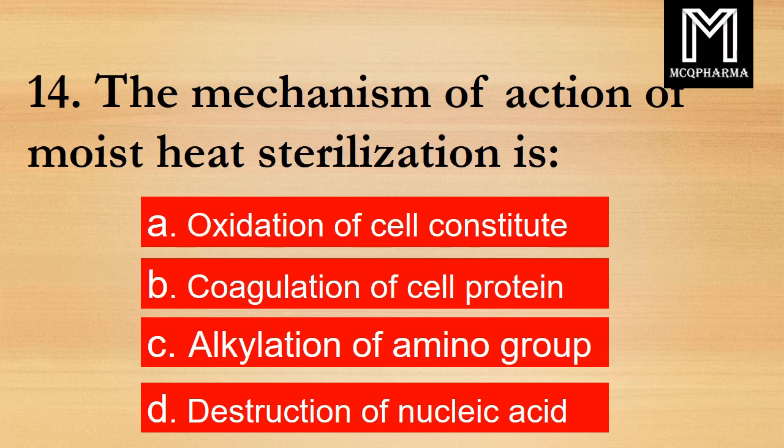Question number 14. The mechanism of action of moist heat sterilization is? Option A: Oxidation of cell constituents. B: Coagulation of cell protein. C: Alkylation of amino group. D: Destruction of nucleic acid. Correct answer: Option B, Coagulation of cell protein.